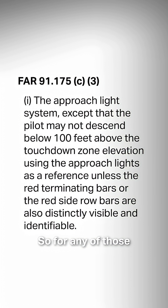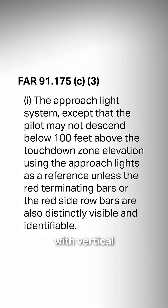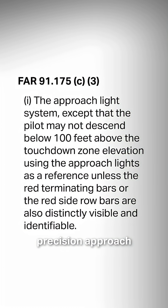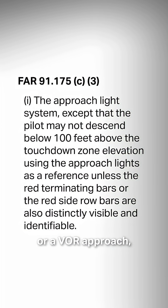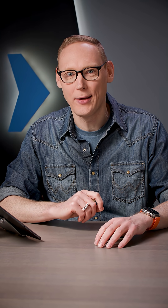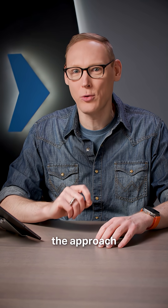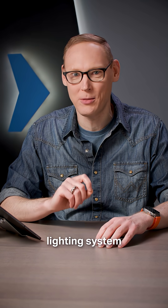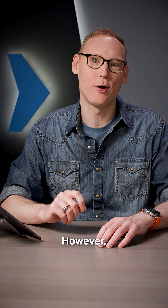So for any of those three types of approaches — a precision approach like an ILS, an approach with vertical guidance like an LPV or an LNAV/VNAV, or a non-precision approach like an LNAV-only or a VOR approach — you can descend below that DA or MDA when you have the approach lighting system in sight.